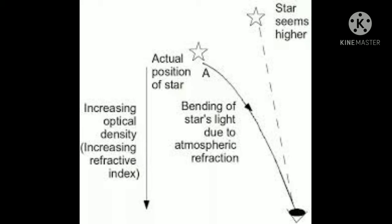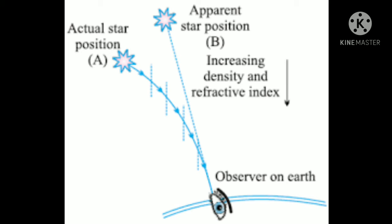Let's see one observation. In position A, that is the actual position of the star, we see the star higher than that position — the apparent star position appears higher than the actual position. This is because increasing optical density increases the refractive index. As we know, there are many layers of the atmosphere, and density keeps changing as we move up or down. The atmosphere can be considered to consist of different layers of different densities, which act as rarer or denser media with respect to each other. Due to this, when light rays pass through Earth's atmosphere, they undergo refraction.